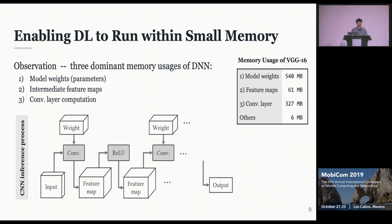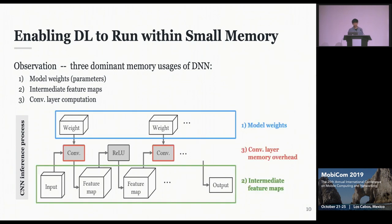The blue figure shows the typical CNN process. As you know, it receives an input, processes each layer, and finally provides an output. Here we can find the dominant memory usages: first, model weights; second, intermediate feature maps; and lastly, the red boxes indicating the memory overhead of the convolution layers.